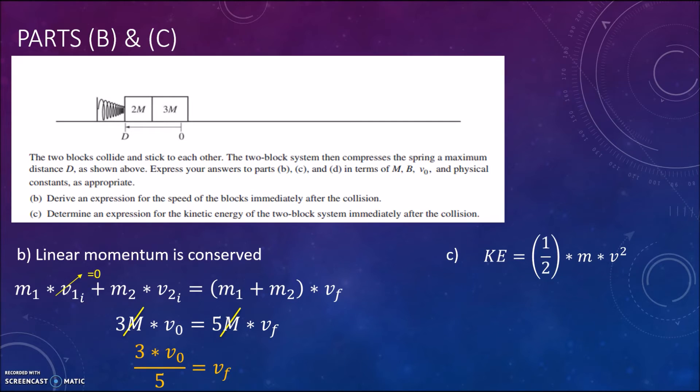So part c just says determine an expression for the kinetic energy. And kinetic energy as we know is 1/2 mv². So we simply use this velocity that we just found right here and plug it in. The mass will again be the total mass of the system as the two blocks are now connected. So doing some further simplification we get the kinetic energy is equal to 9m times initial velocity squared all over 10. And that should also give you the points for part c.